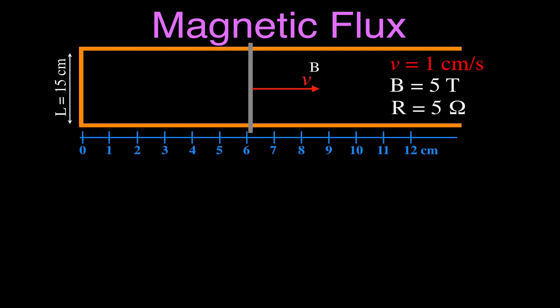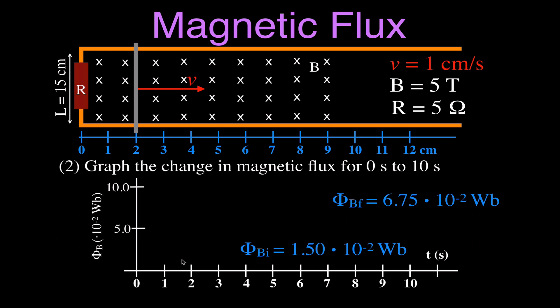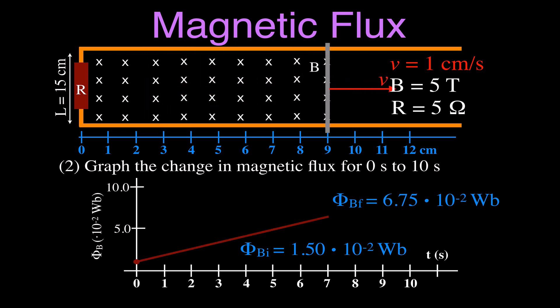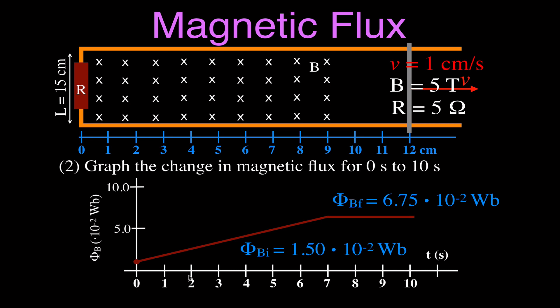Now we want to graph that change over time. At time equals 0, starting at 2 centimeters, we have an initial magnetic flux of approximately 1.5 times 10 to the minus 2 Webers. As we move the bar across, the magnetic flux in that coil changes until we get to 9 centimeters. So we have an increase from 0 seconds to 7 seconds, and then for the last 3 seconds it doesn't change. In order to have an induced voltage, the magnetic flux has to be changing — so there's only going to be an induced voltage for the first 7 seconds, and then no induced voltage for the last 3.